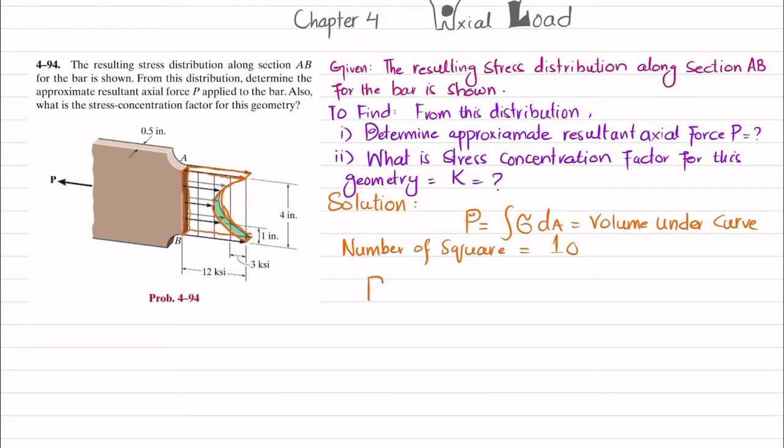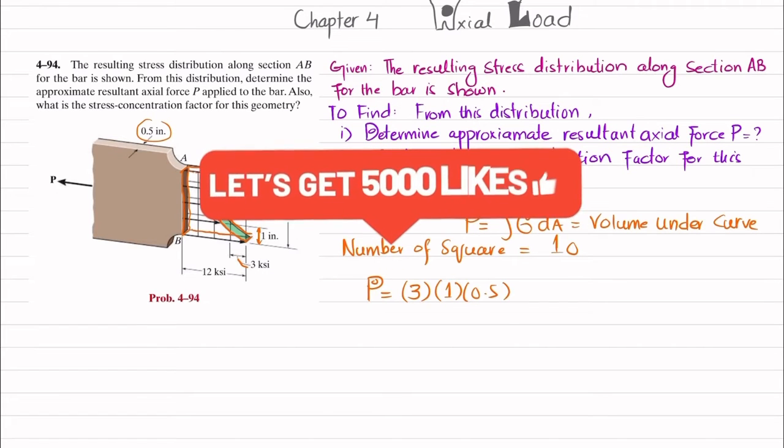So we know that P will be equal to, you can see the intensity of 1 is 3, one of the square side is 3 KSI. So 3 multiplied by the area. What is the area? So 1 is the height of this and 0.5 is the thickness. So 3 into 1, 1 into 0.5.